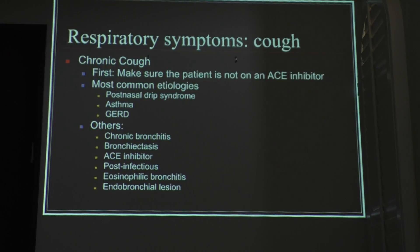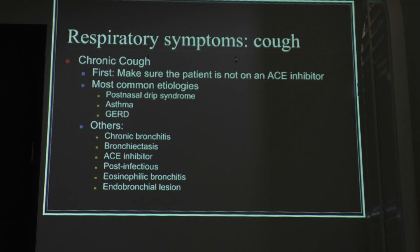When you have chronic cough, make sure the patient is not on an ACE inhibitor. The most common etiologies are: number one, postnasal drip syndrome; asthma; and gastroesophageal reflux. Among other causes, post-infectious is probably one of the very common causes of chronic cough.